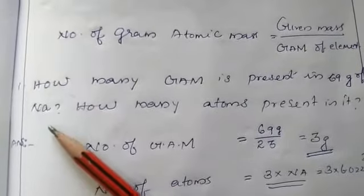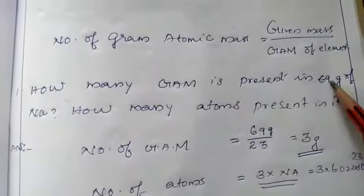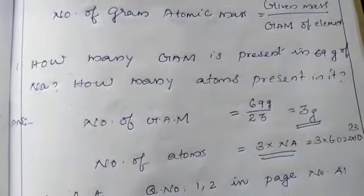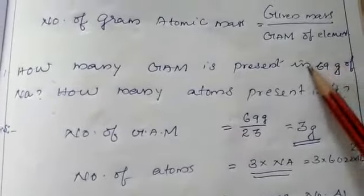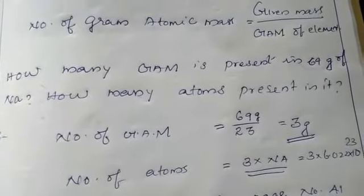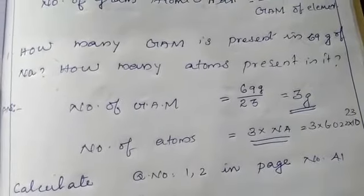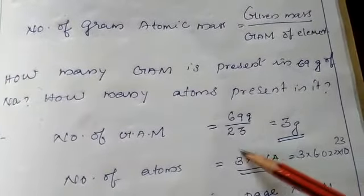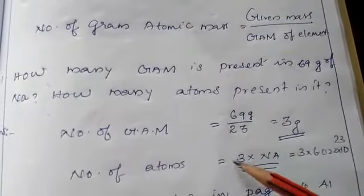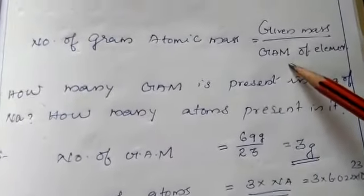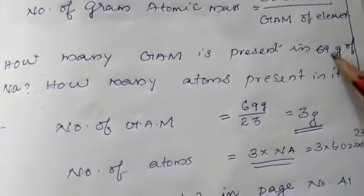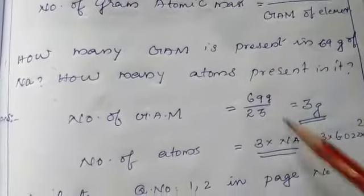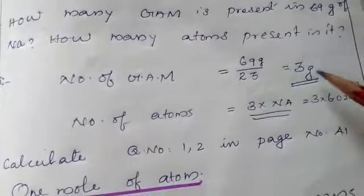Here is a problem: How many GAM is present in 69 grams of sodium, and how many atoms are present? The given mass is 69 g. The atomic mass of sodium is 23, so the GAM of sodium is 23. Number of GAM = given mass ÷ GAM = 69 ÷ 23 = 3. So the number of GAM is equal to 3.